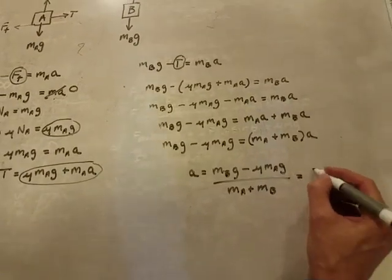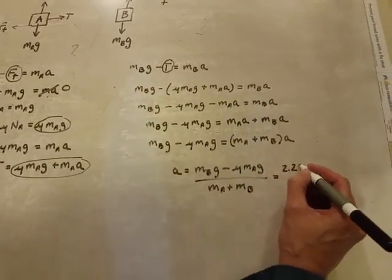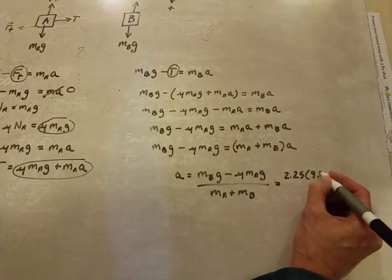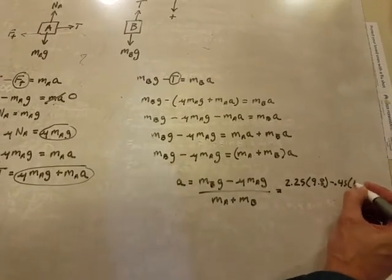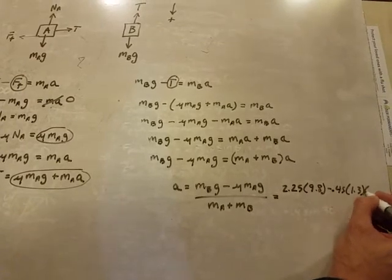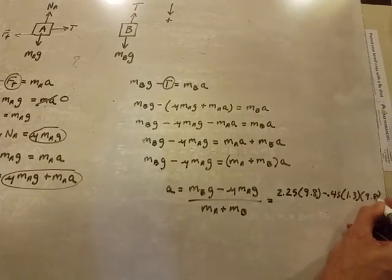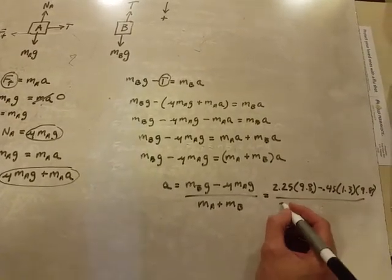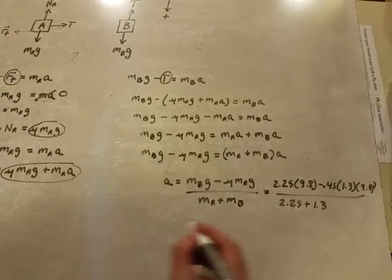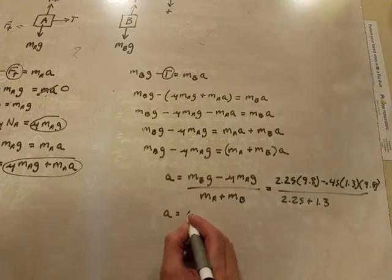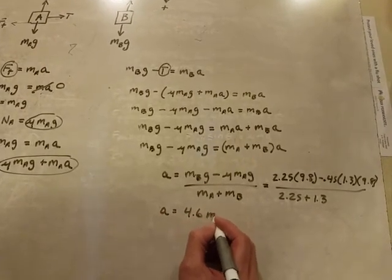So now if we plug in some numbers, this is 2.25 times 9.8 minus 0.45 times 1.3 times 9.8 divided by 2.25 plus 1.3. This gives us an acceleration of 4.6 meters per second squared.